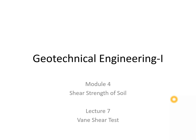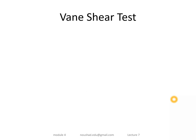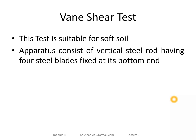In this lecture we are going to discuss the vane shear test. The vane shear test is suitable for soft soil. The apparatus consists of a steel rod with blades at the end — this is the vane shear apparatus.